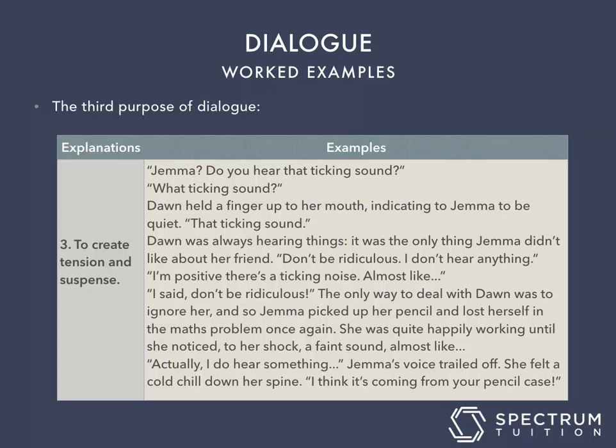The third purpose of dialogue is to create tension and suspense in a narrative. For example: 'Jemma, do you hear that ticking sound?' 'What ticking sound?' Dawn held a finger up to her mouth, indicating to Jemma to be quiet. 'That ticking sound.' Dawn was always hearing things — it was the only thing Jemma didn't like about her friend. 'Don't be ridiculous. I don't hear anything.' 'I'm positive there's a ticking noise. Almost like—' 'Don't be ridiculous.' Jemma picked up her pencil and lost herself in the maths problem. Then she noticed, to her shock, a faint sound. 'Actually, I do hear something.' Jemma's voice trailed off. She felt a cold chill down her spine. 'I think it's coming from your pencil case.'